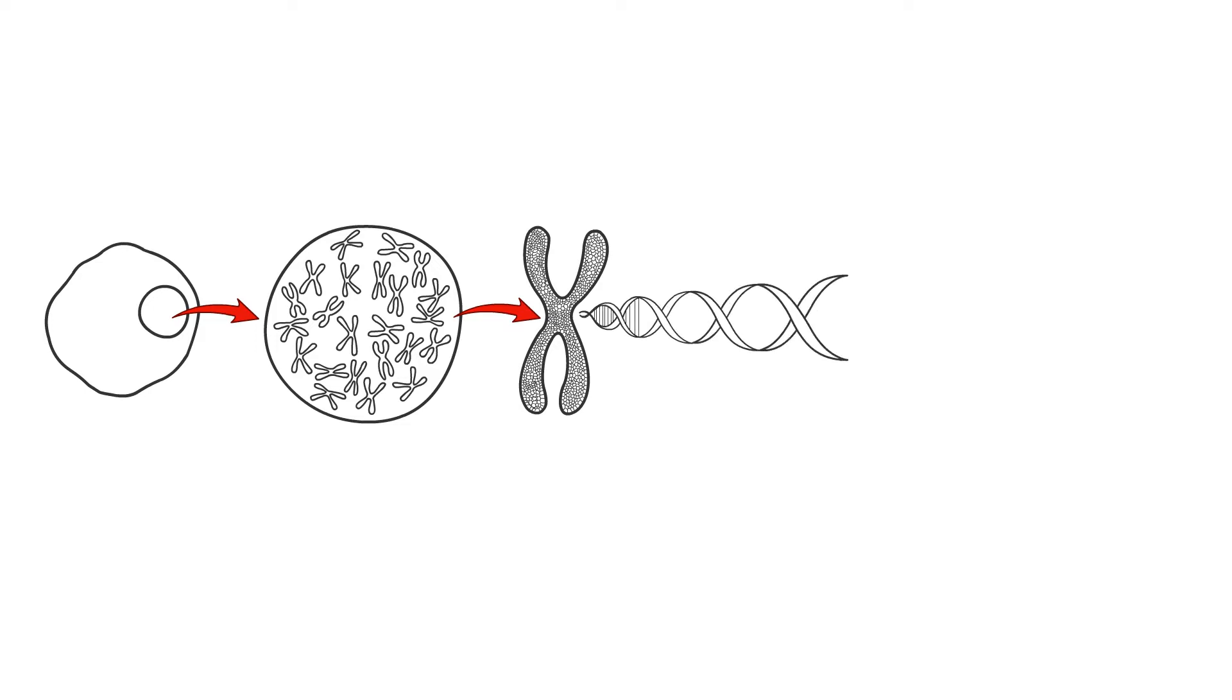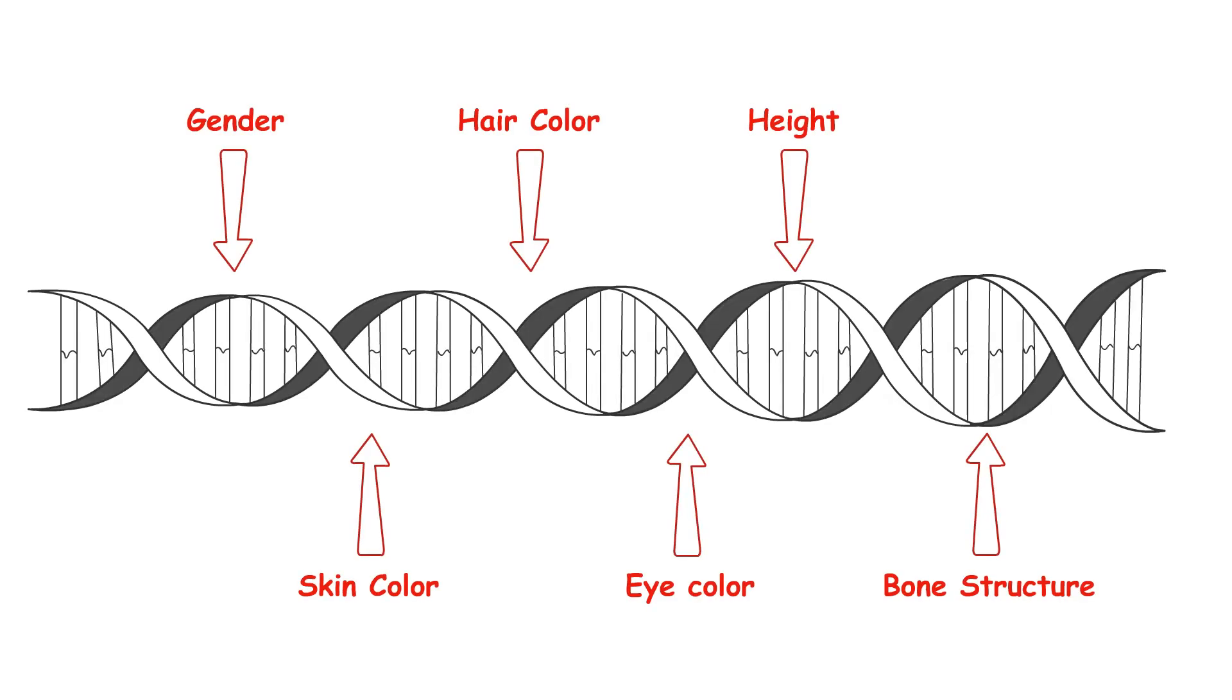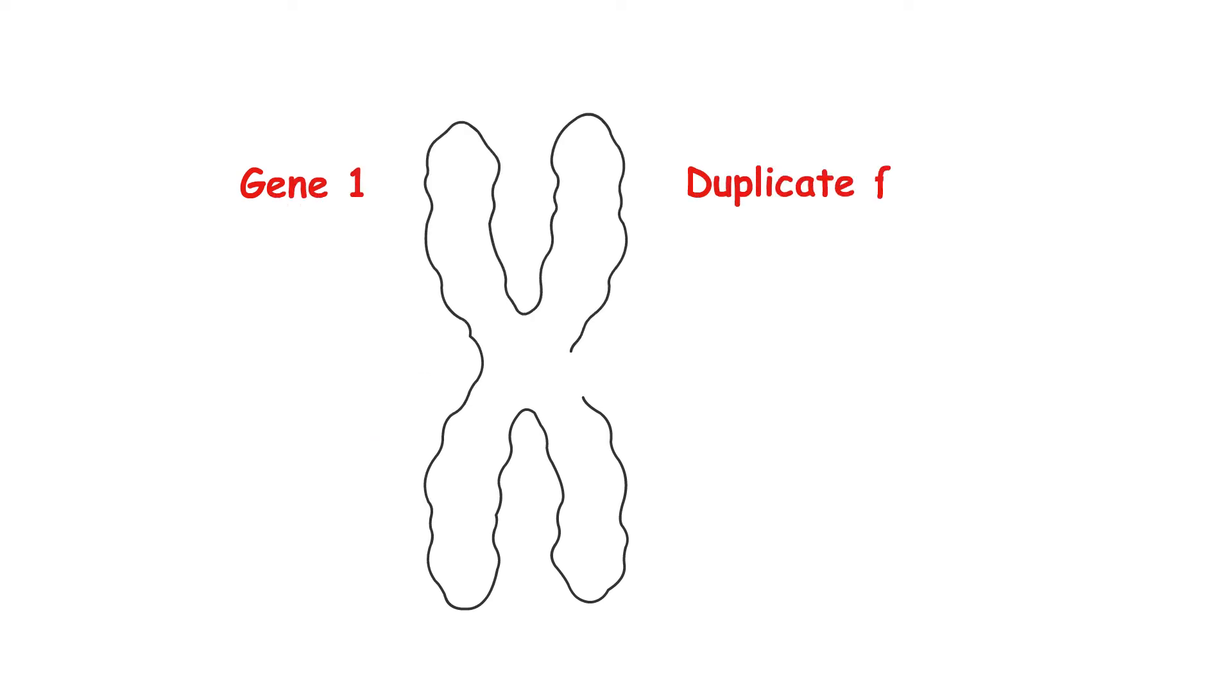Genes reside in the 23 pairs of chromosomes inside the nucleus of every cell. Genes control every activity of that cell. Each gene has a duplicate. The second one is a backup in case something goes wrong with the first gene. Only one of them is active at a time.